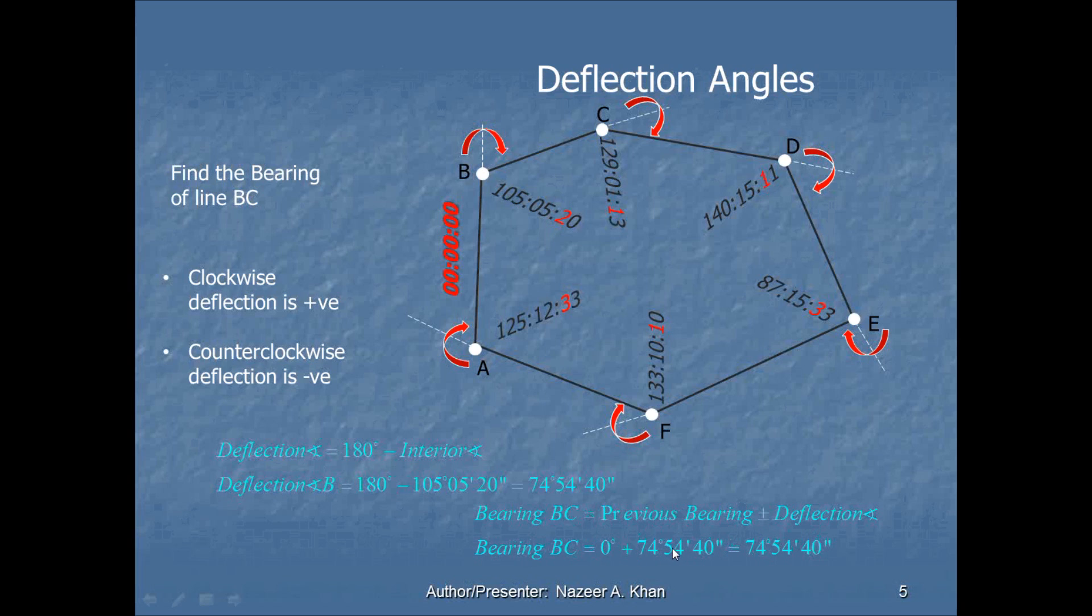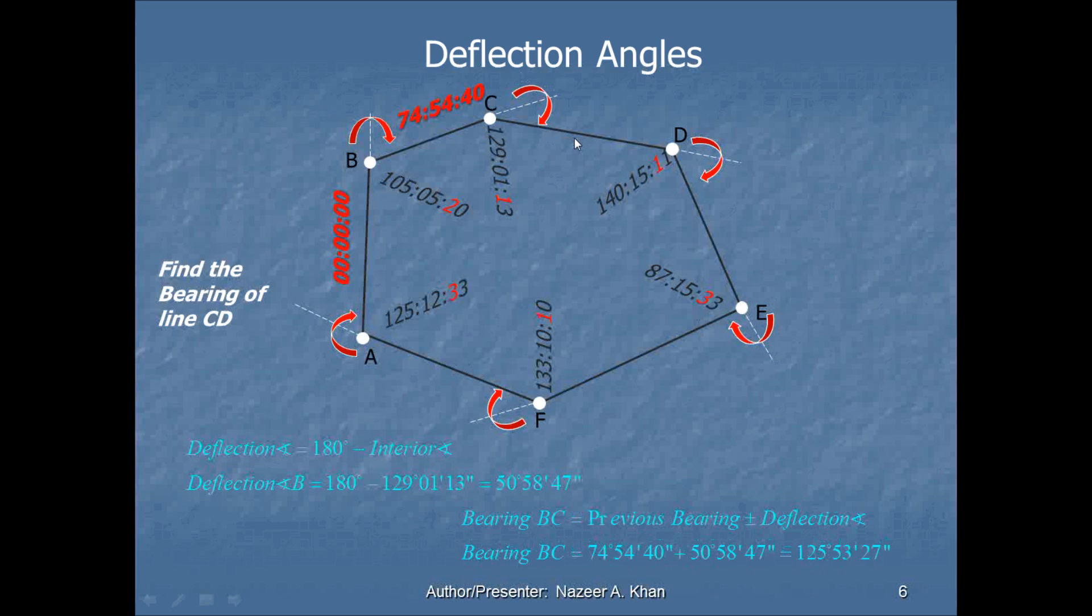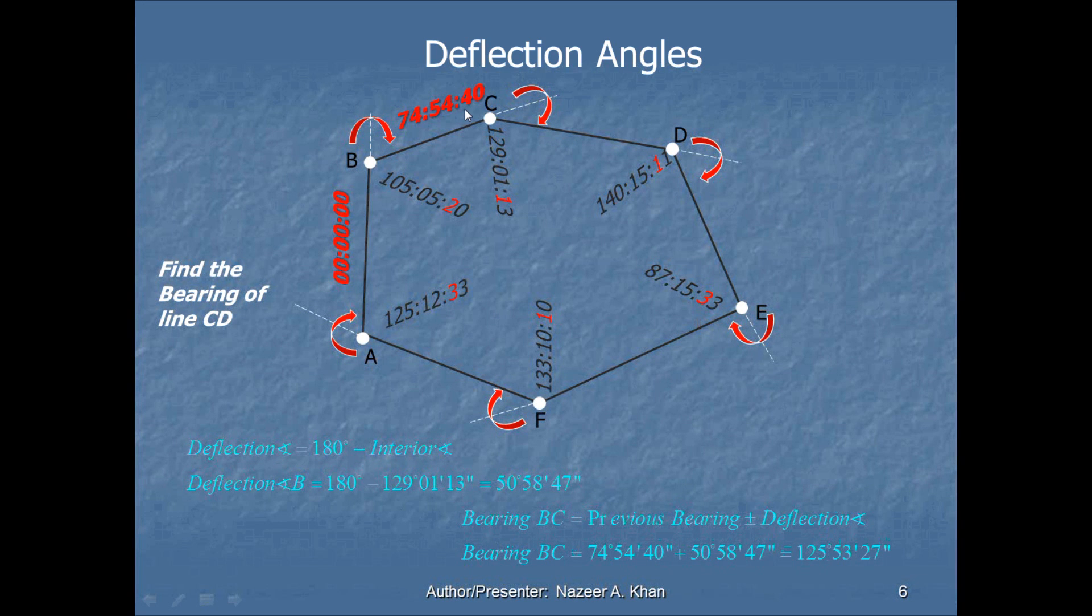Because the deflection angle becomes the bearing of BC. If we were to add 74 degrees 54 minutes 40 seconds to 0, it would be 74 degrees 54 minutes 40 seconds. So in this case, that bearing is equal to the deflection angle. The bearing is equal to the deflection angle.